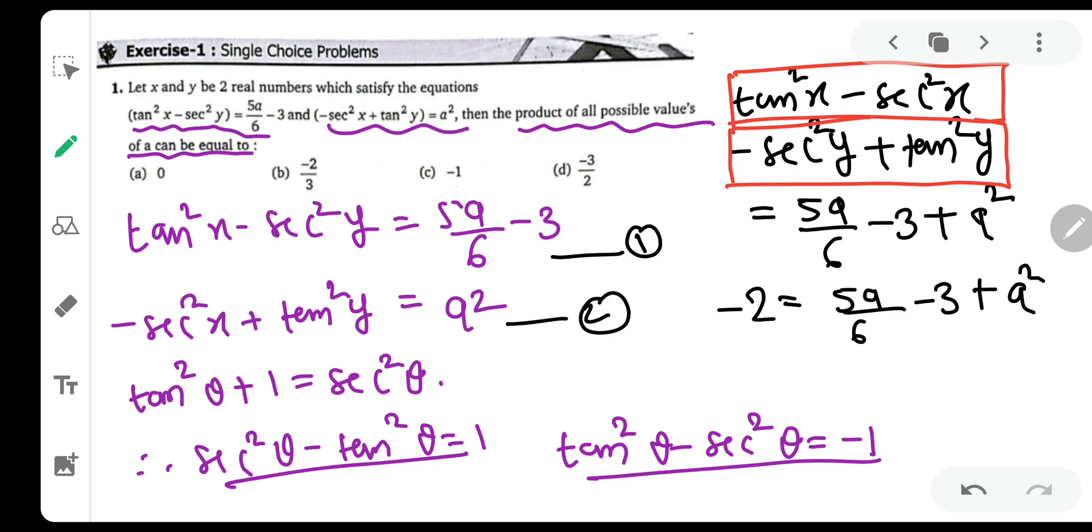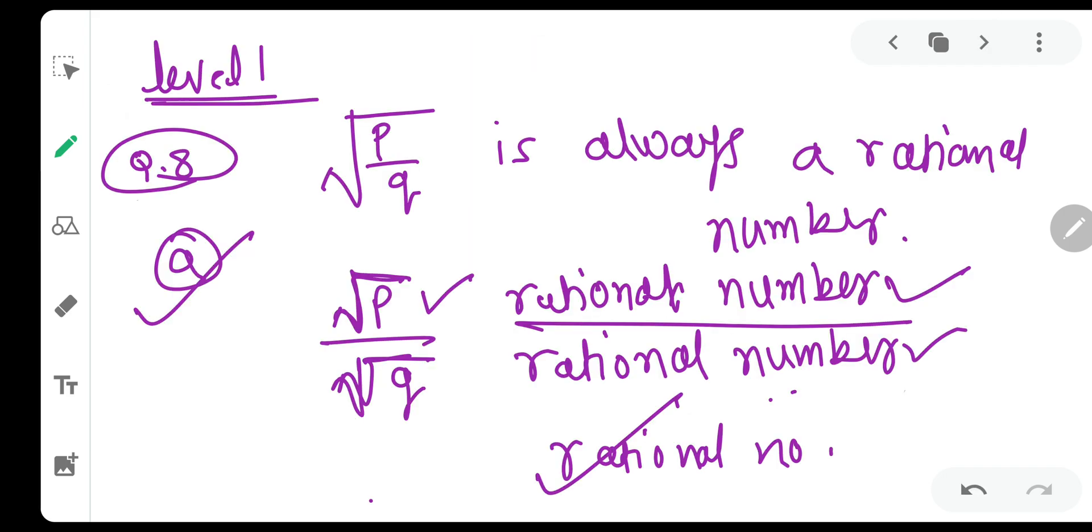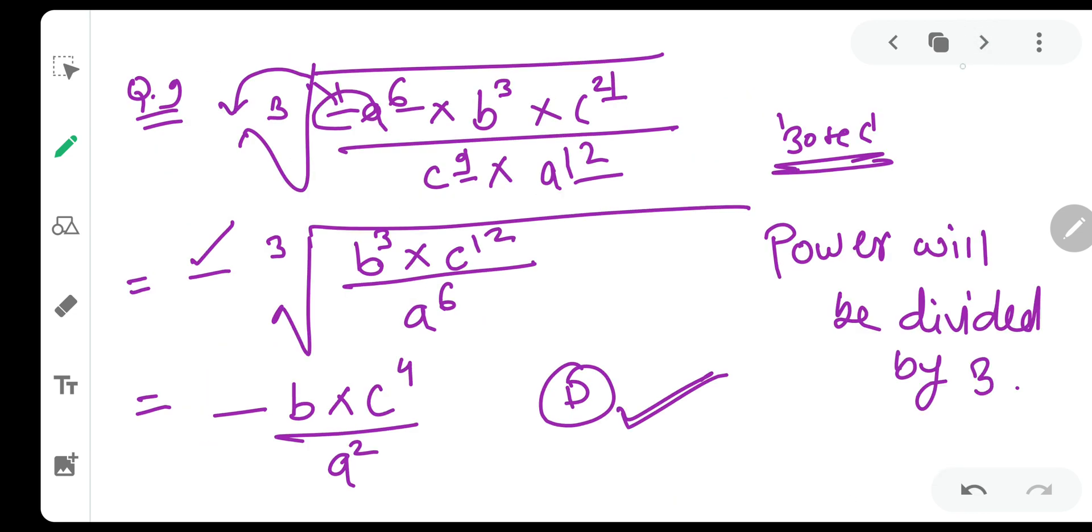Shift the minus 2 on the other side, so it will be a square plus 5a by 6 minus 1, because minus 3 plus 2.